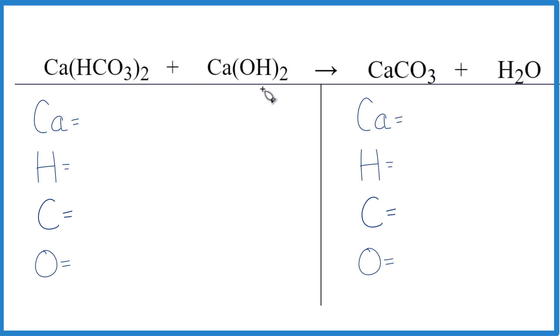The key thing really here is first to count everything up accurately. So let's do that. We have one plus one, we have two calcium atoms. Hydrogens: we have one times two, so there's two there, plus the one times two, two there. So we have four of those.